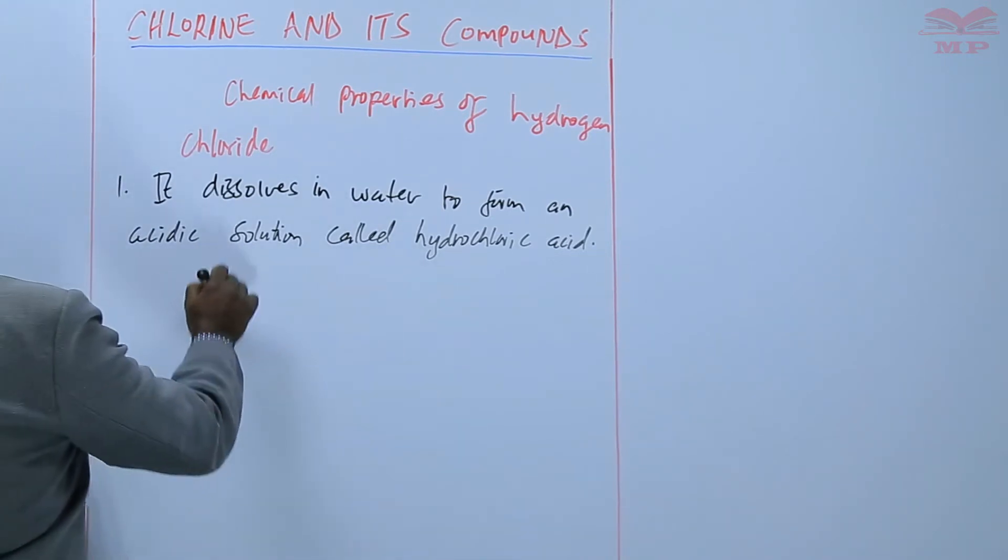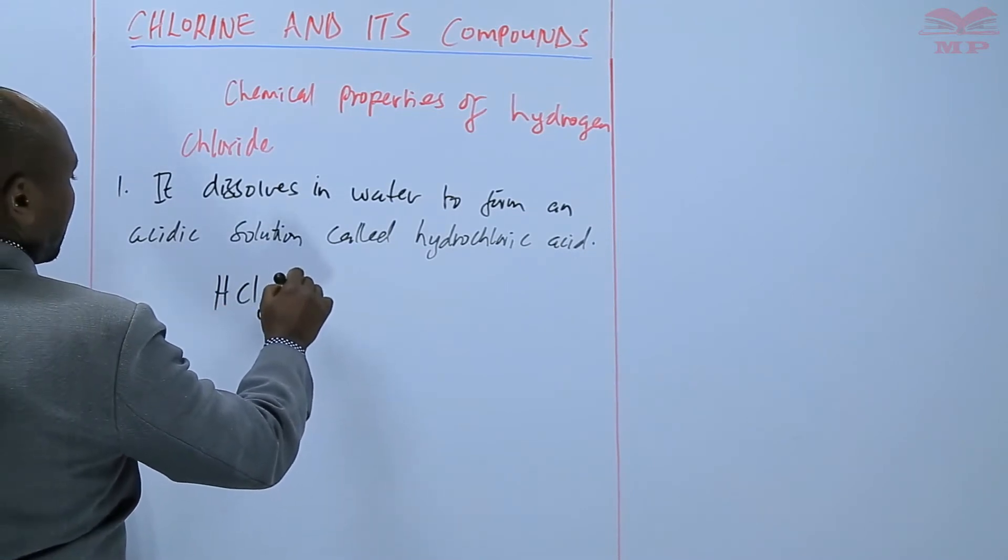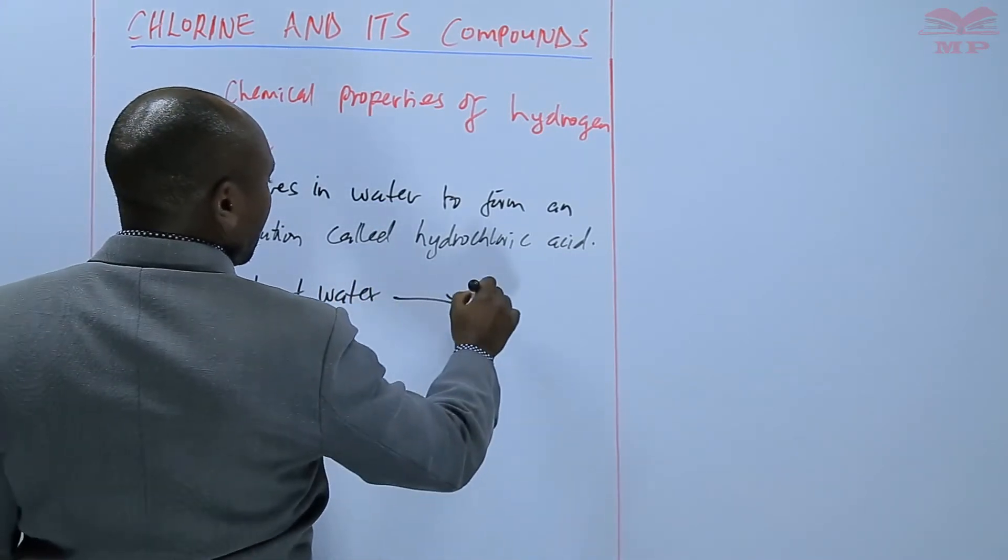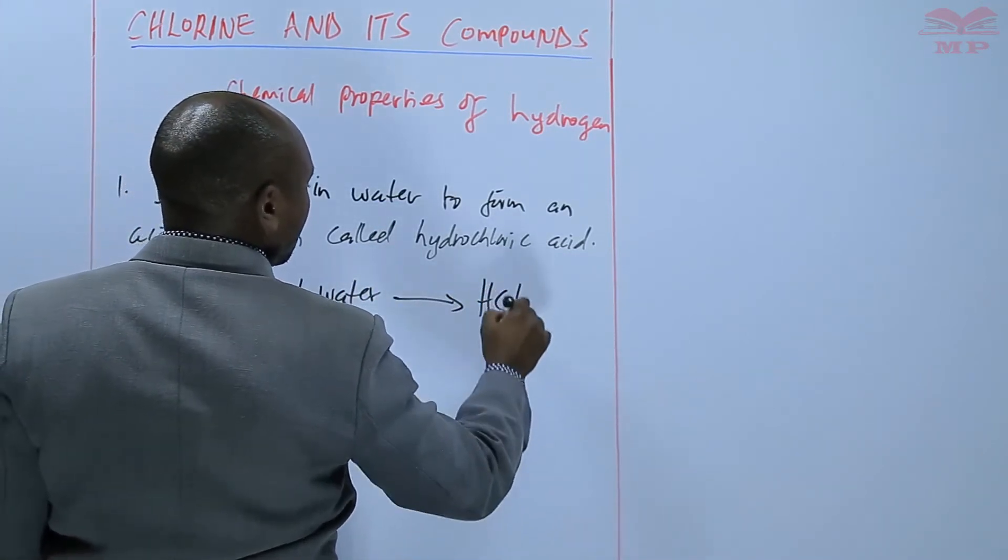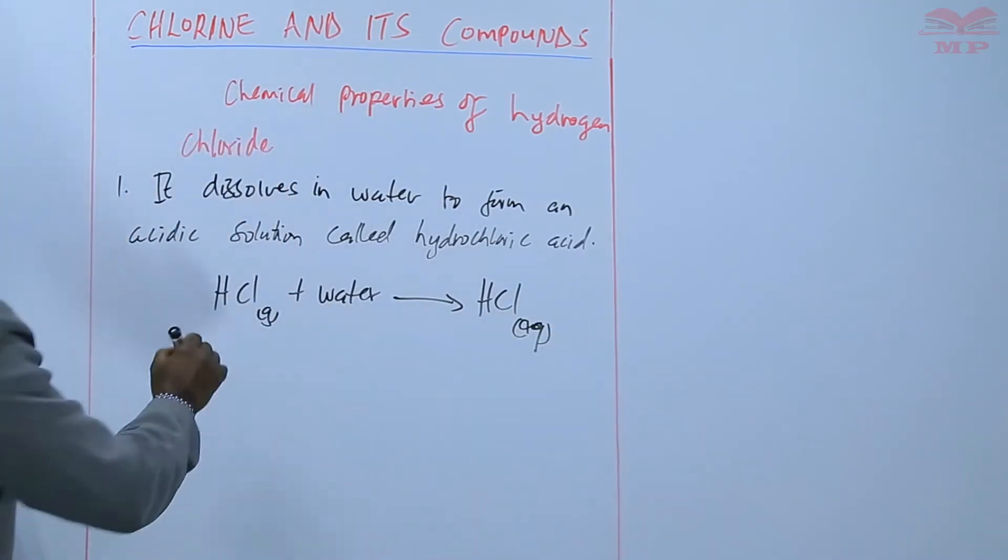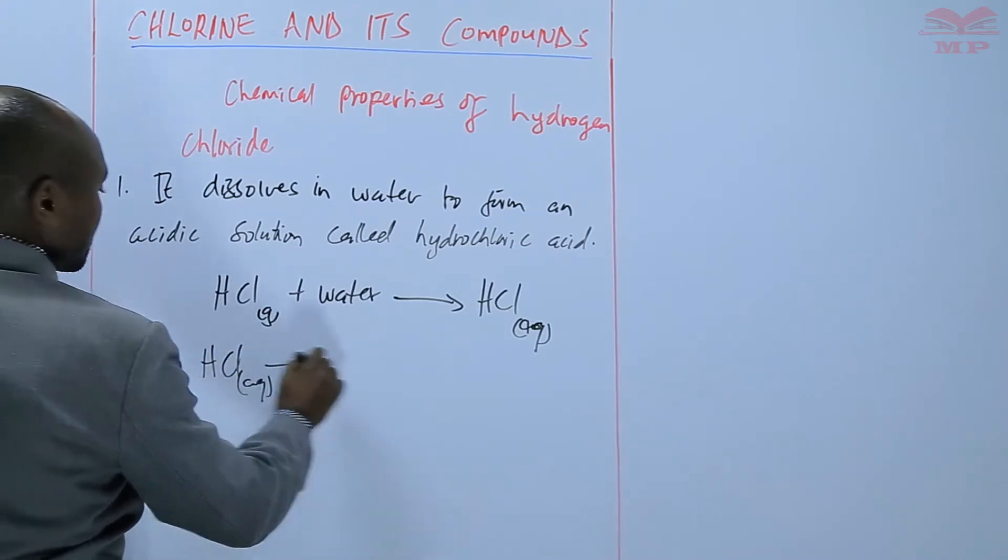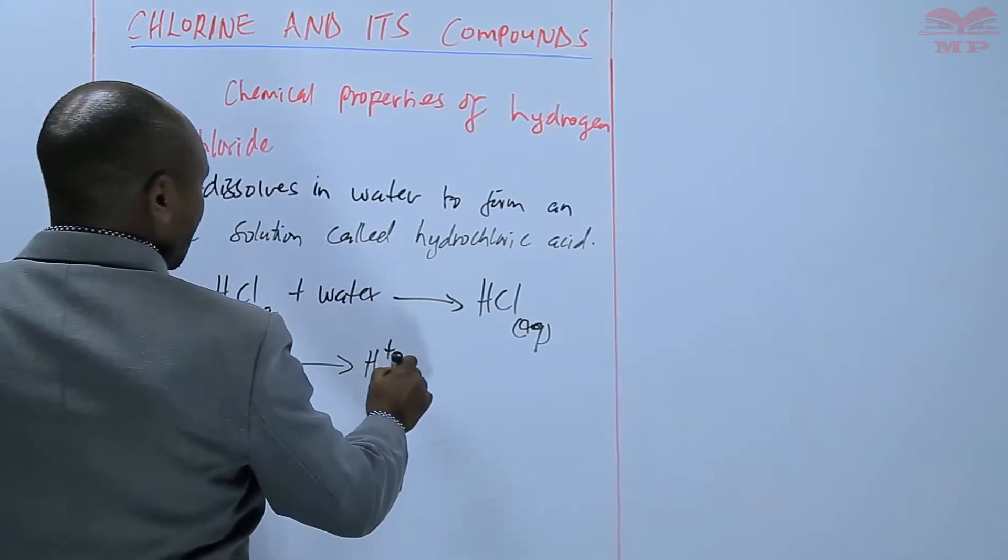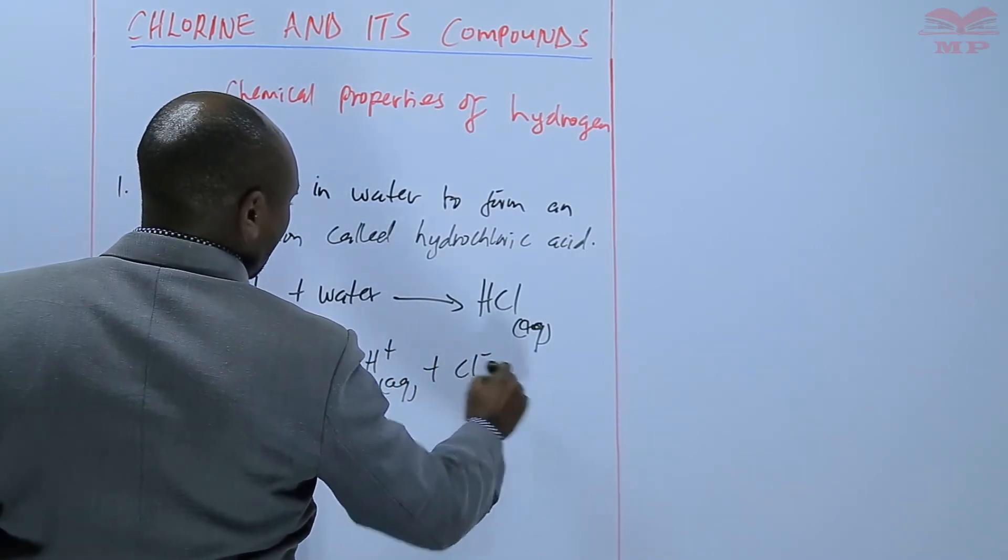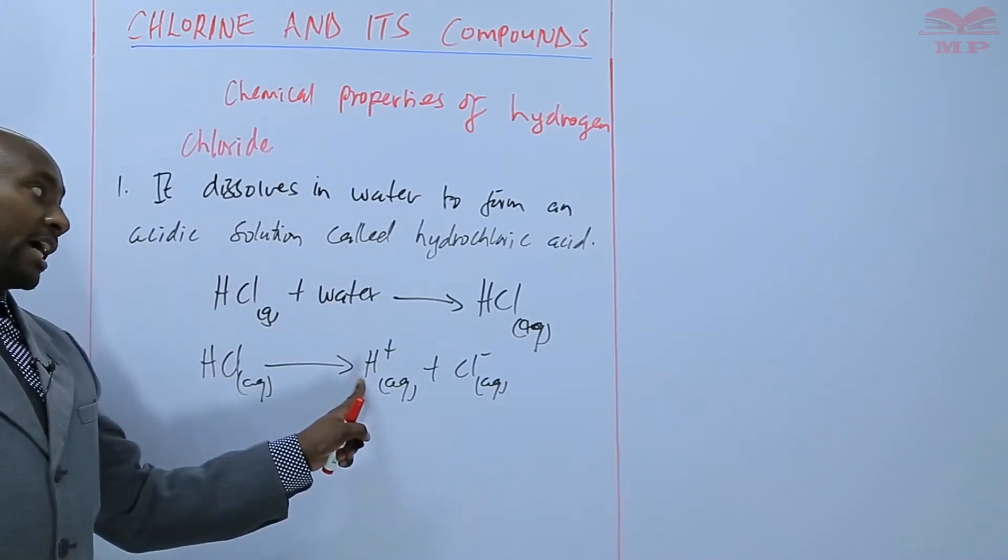And on this, we are saying that HCl gas, when it dissolves in water, we get aqueous HCl, and this is hydrochloric acid. And hydrochloric acid has two ions. We have hydrogen ions and chloride ions. So the acidity is because of the presence of hydrogen ions.